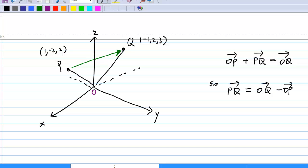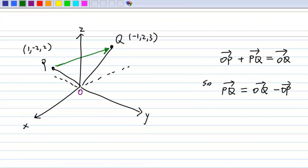We are interested in the vector from P to Q. Notice that in order to find PQ, we know that OP plus PQ is equal to OQ. Therefore, PQ is equal to OQ minus OP.